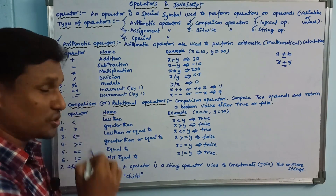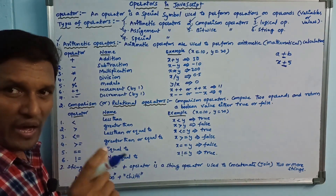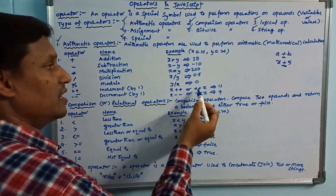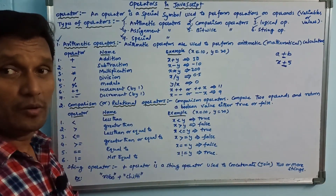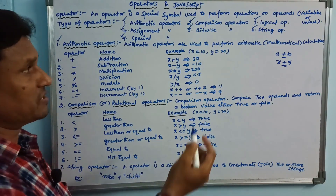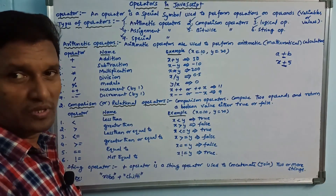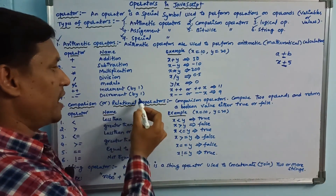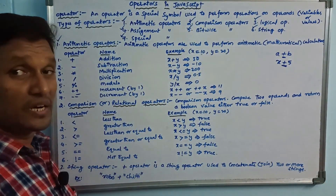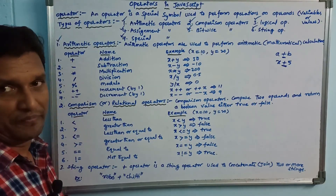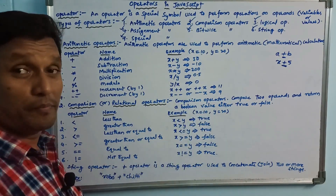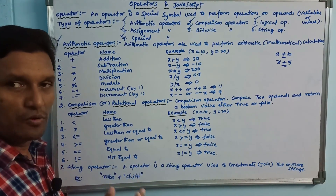The increment operator is used to increase a value by 1. There are pre-increment (++x) and post-increment (x++). For example, if x value is 10, then x++ gives 11. The decrement operator uses two minus symbols and means the value is decreased by 1. x-- is post-decrement and --x is pre-decrement.